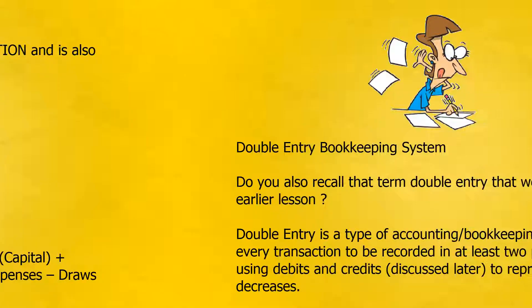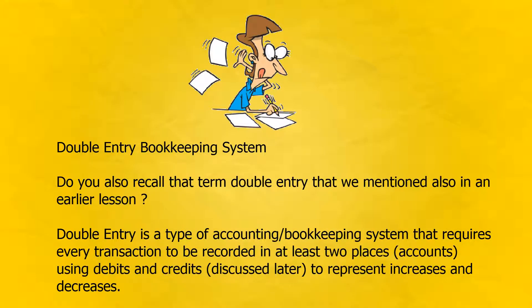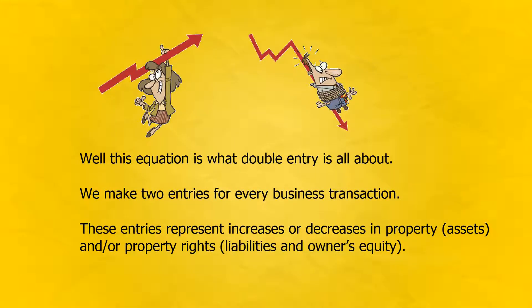Double-entry bookkeeping system. Do you also recall that term double-entry that we mentioned in an earlier lesson? Double-entry is a type of accounting bookkeeping system that requires every transaction to be recorded in at least two places — accounts — using debits and credits, discussed later, to represent increases and decreases. Well, this equation is what double-entry is all about.